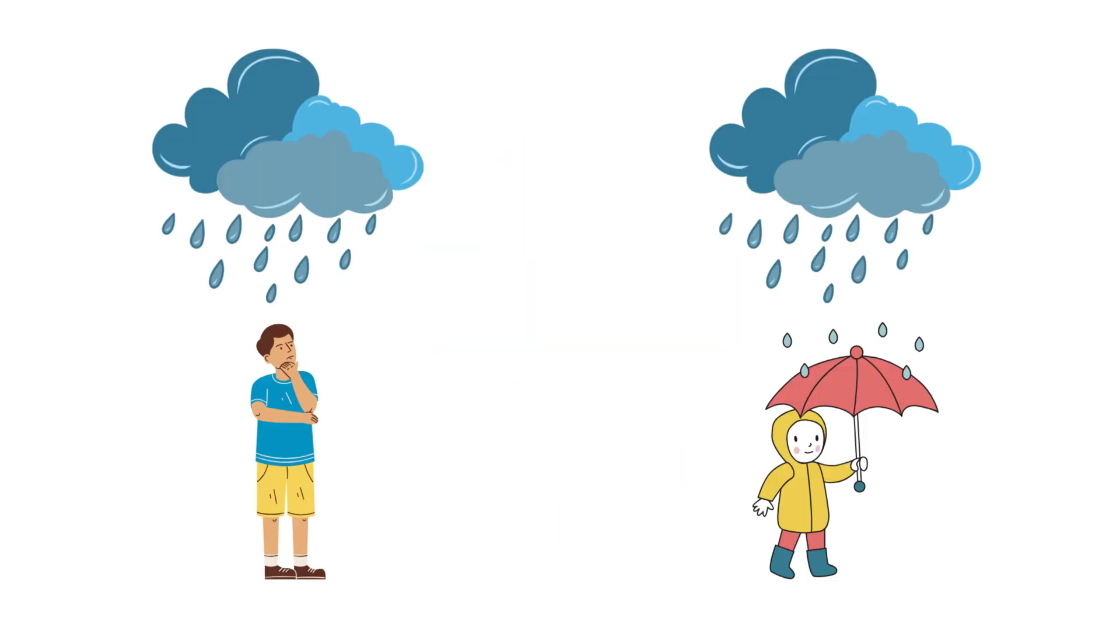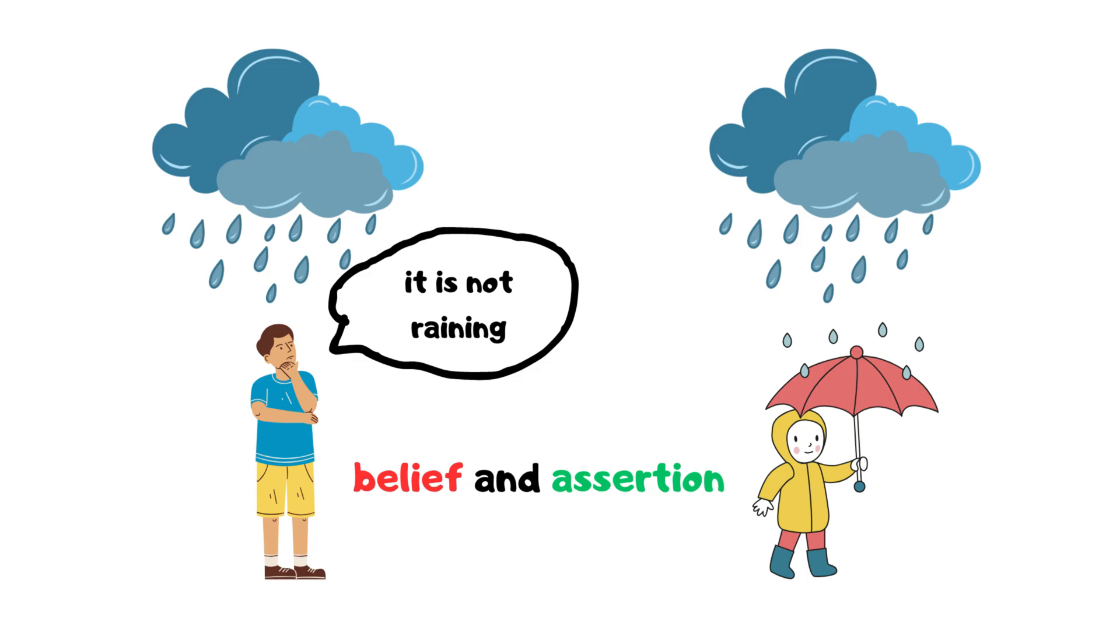Moore's paradox. A statement like 'it is raining, but I don't believe it is raining' is logically consistent but paradoxical, because it expresses a contradiction between belief and assertion.